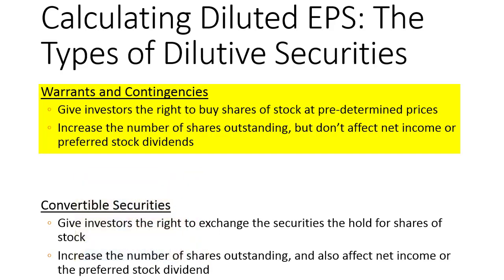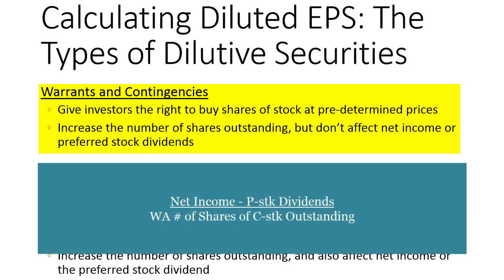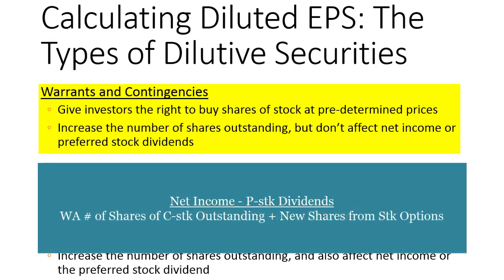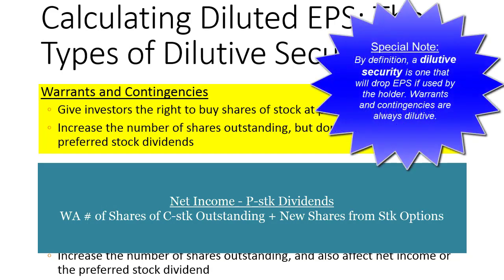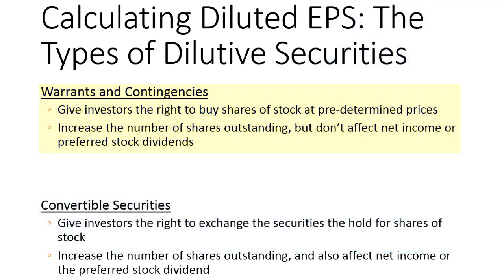Warrants and contingencies always dilute earnings per share — they're going to drop it no matter what. Why? Because it doesn't change net income. If I issue more shares it doesn't change my preferred stock dividend, so it doesn't change the numerator at all. All it does is issue more shares, so the number of shares on the bottom of my EPS calculation gets bigger while nothing changes on top. That's always going to drop that ratio and drop EPS.